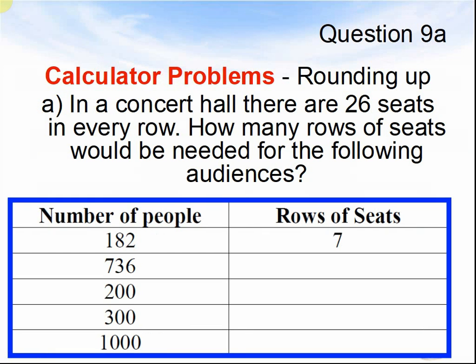Question 9a. Rounding up. In a concert hall there are 26 seats in every row. How many rows of seats would be needed for the following audiences? Pause the video until you are ready for the next question.